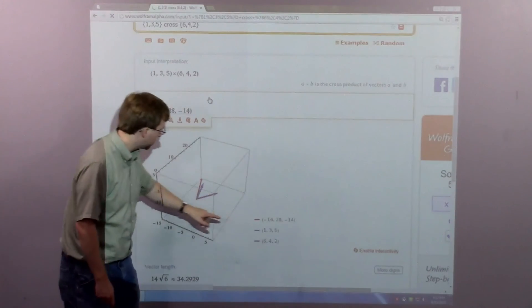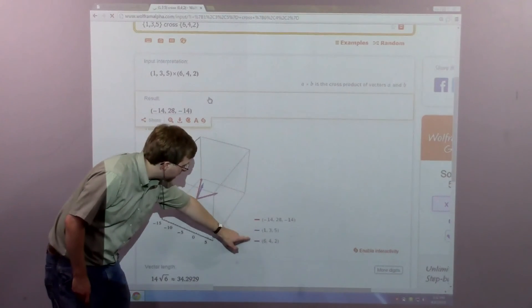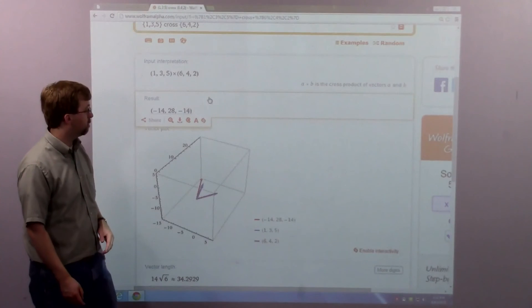You can see the result is in red. This is my A vector, my B vector, in a 3D space as well.